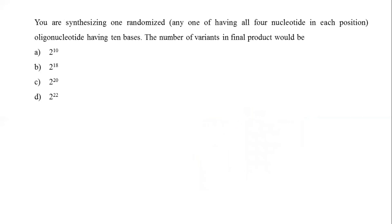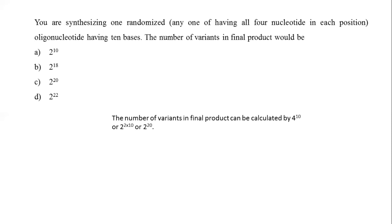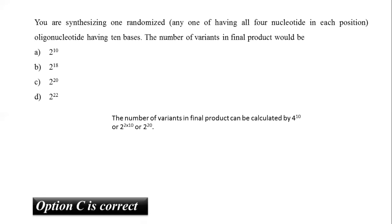The next question: you are synthesizing a randomized oligonucleotide having all four nucleotides at each position, with 10 bases. The number of variants in the final product would be 4^10, which can also be written as 2^2 raised to the power 10, or 2^20. From the given options, option C is the correct answer.